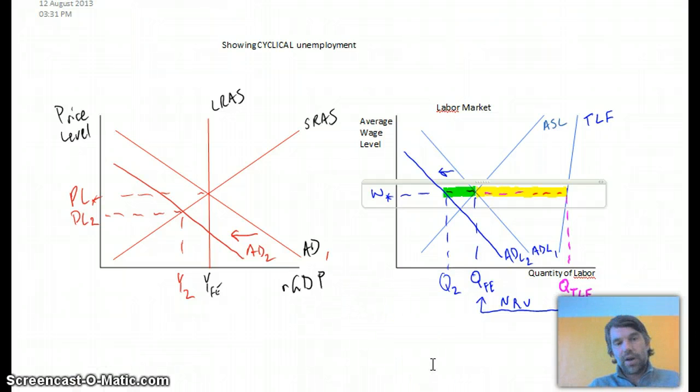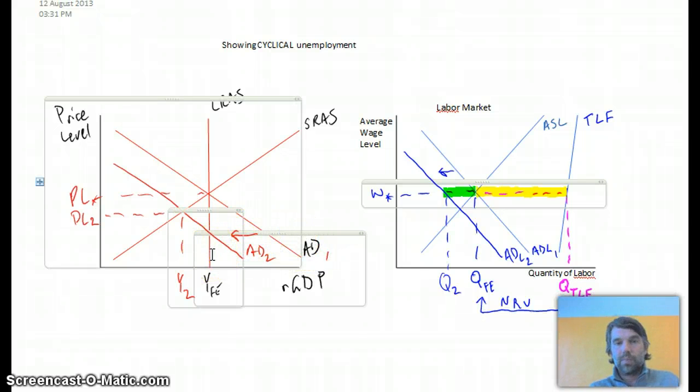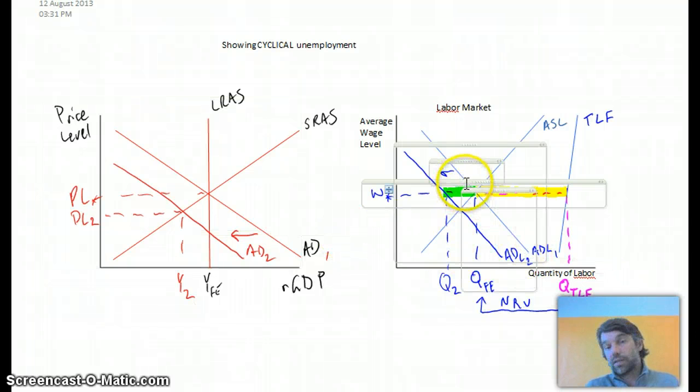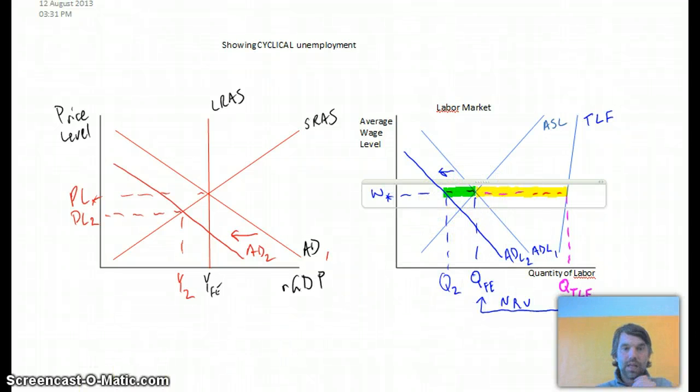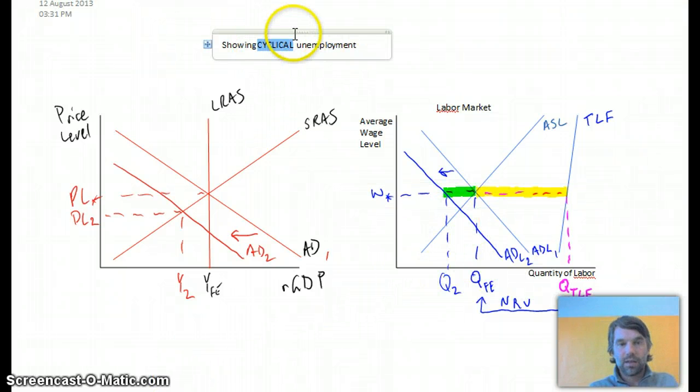So to recap, we saw that aggregate demand shifted to the left. Employers don't need to produce as much stuff, therefore they don't need as many workers. That's especially true at this higher wage. So they have to lay a certain amount of people off. That increase is what we see as cyclical unemployment.